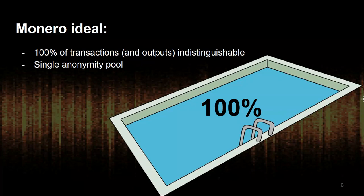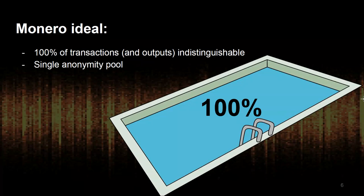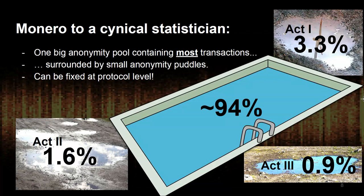Talking about fungibility and the Monero ideal: the goal is always to have 100% of transactions and outputs be effectively indistinguishable from each other, so essentially we would have a single anonymity pool. From a statistician's point of view, we actually have one big anonymity pool that contains most of the transactions, and then several smaller ones — I call them anonymity puddles — that are subsets of transactions that don't blend in with the rest. Today I'm going to talk about three different ones, all around the order of a percent. The good news is all of these can be fixed at the protocol level, so I'll also be presenting possible solutions.